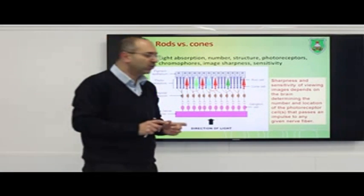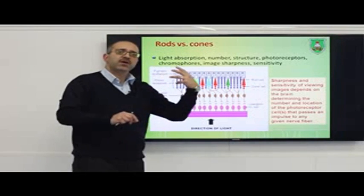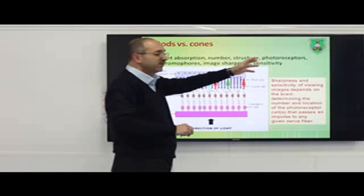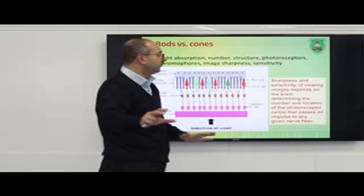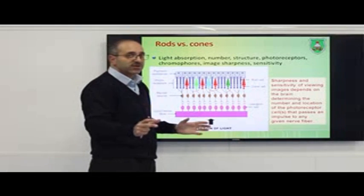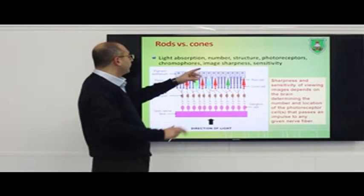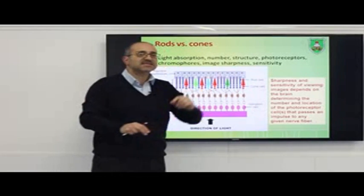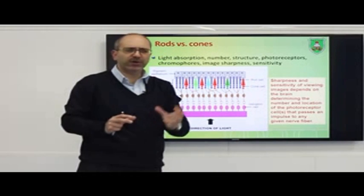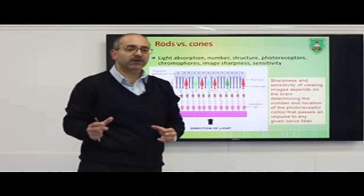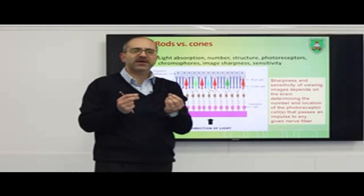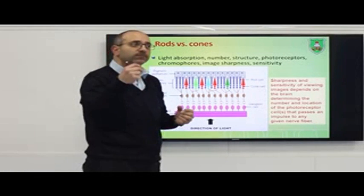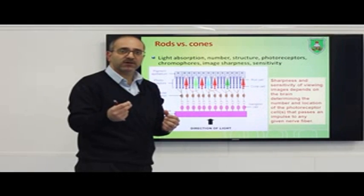There are important differences between rod cells and cone cells in terms of light absorption, number, and structure. The photoreceptor proteins all share the same pigment (11-cis retinal) but differ in amino acid sequence while maintaining similar seven-transmembrane-domain structure. A key difference is sharpness versus sensitivity: in light, images are very sharp; in the dark, images are fuzzy but you can see with much greater sensitivity. In light, you can see colors clearly; in the dark, what you see is not as clear.